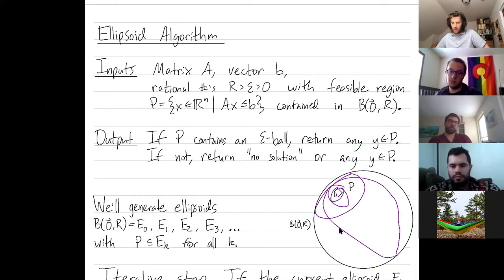And if the feasible region doesn't contain a ball of size epsilon, eventually we're going to get down to an ellipsoid that doesn't contain as much volume as a ball of size epsilon. But since that ellipsoid contains the feasible region, we'll know that the feasible region doesn't have an epsilon ball inside of it.